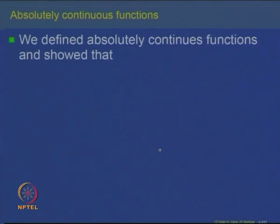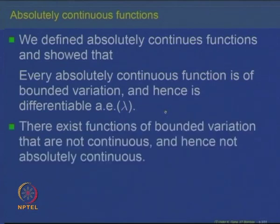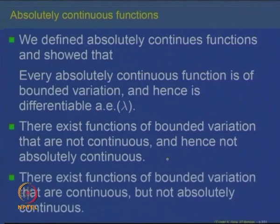We had defined in the previous lecture what are called absolutely continuous functions and showed that every absolutely continuous function is a function of bounded variation, and hence it is a difference of two monotone functions, and as a consequence it becomes differentiable almost everywhere. There exist functions of bounded variation that are not continuous and hence not absolutely continuous, and there exist functions of bounded variation that are continuous but not absolutely continuous.